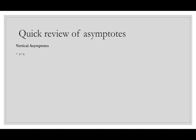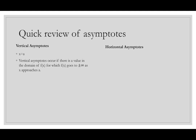This is the graph of f(x) = x/(x-2). We can see a vertical asymptote at x = 2 where the function goes up to infinity and down to negative infinity. There's also a horizontal asymptote at y = 1, because as we look to the right and left, the graph is headed toward 1.